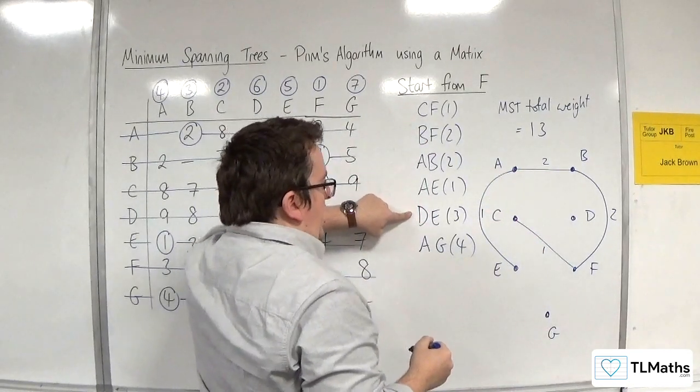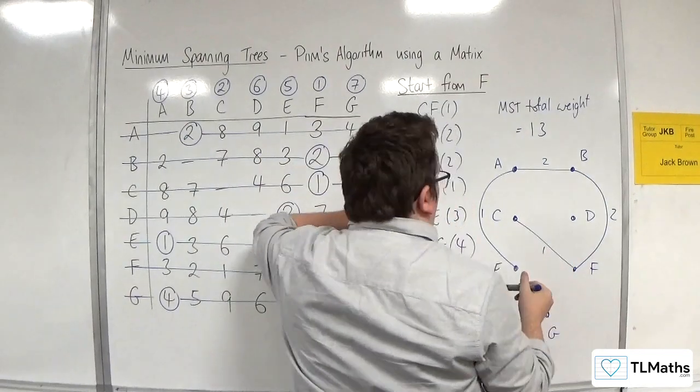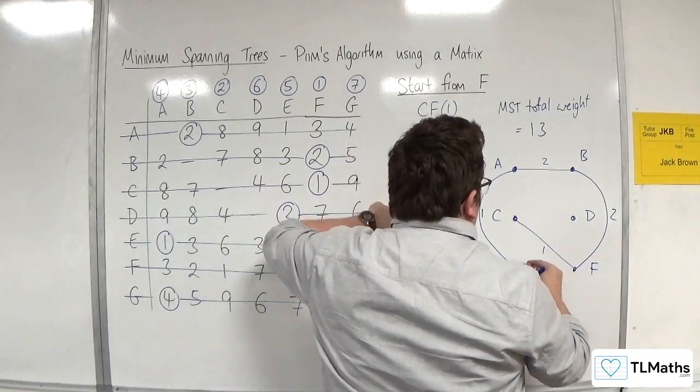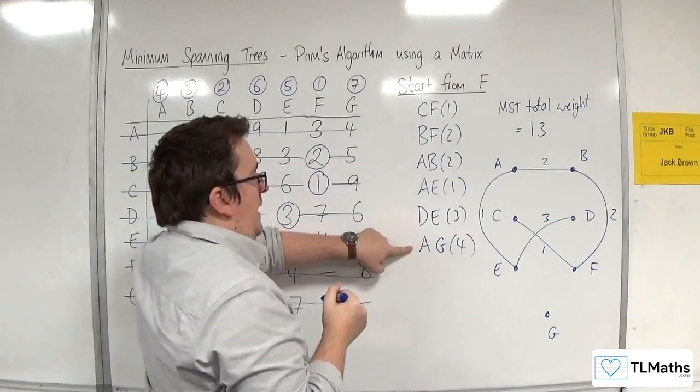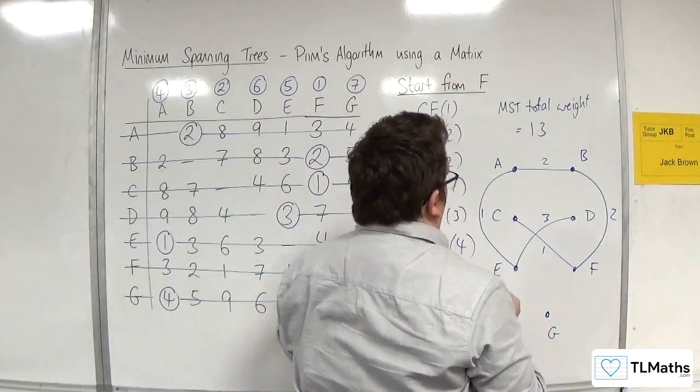D to E is 3. Well, I'm going to have to go around. That's 3. And A, G, is 4.